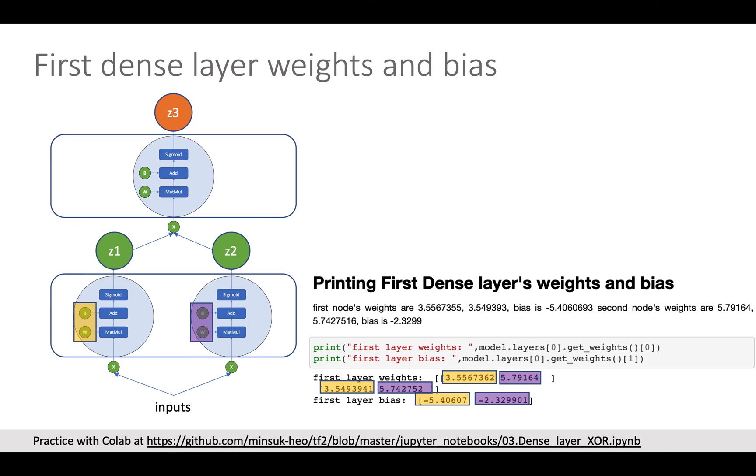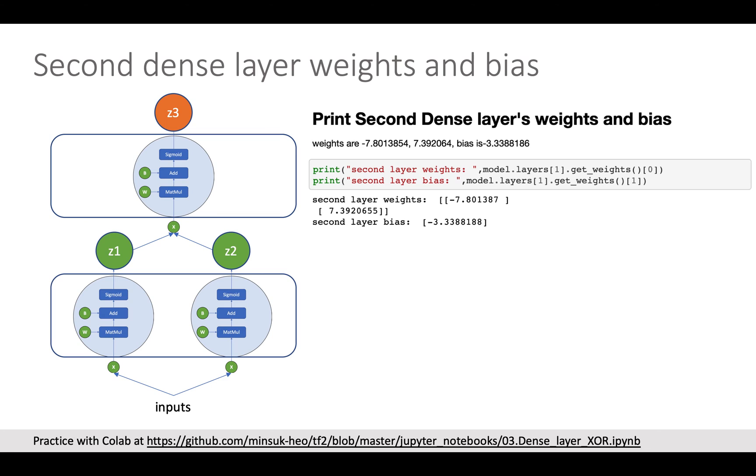You also can print each Dense Layer node's weight and bias. Just make sure the number of columns are the number of nodes in the Dense Layer, and the number of rows are the number of weights in the node. And here you can find the second Dense Layer's weight and bias value as well.